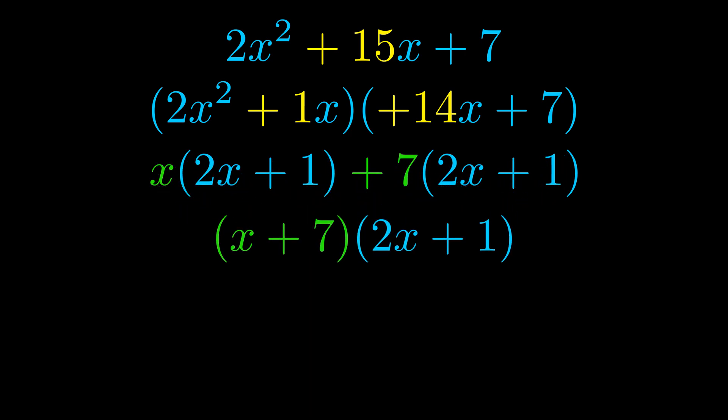The blue values are the same. Those blue values will become one of our factors and we will combine the two green values, the GCFs that we pulled out, to get the other one. And that is our fully factored equation.